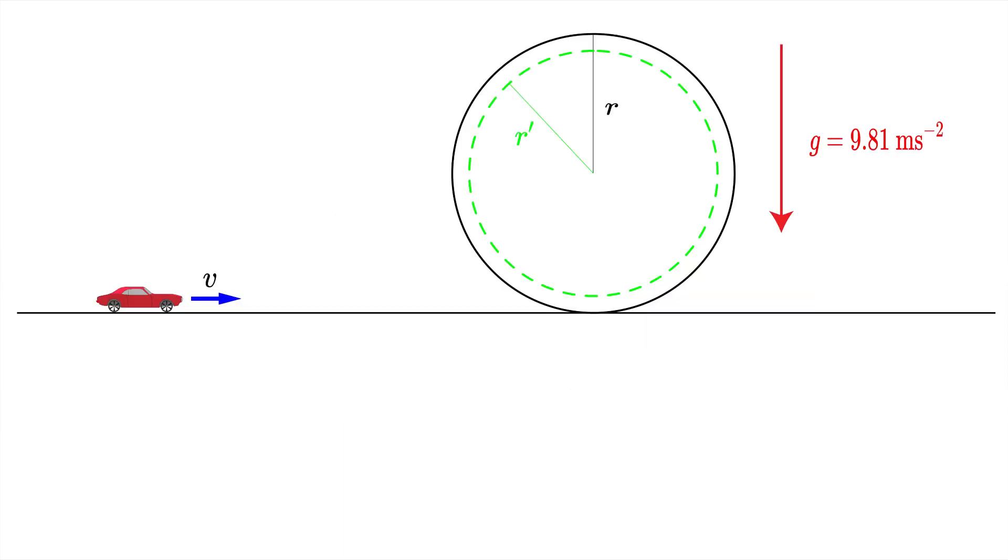We can now denote the effective radius r prime, which is defined as r minus L, and we don't have to worry about the center of mass for now. Now I want to talk about symmetries of this problem.